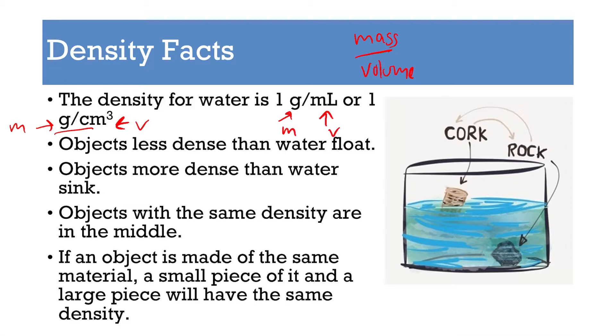Lastly, if an object is made of the same material, a small piece and a large piece will have the same density. So what do I mean by that? If I have a large cube of Fe and I measure the mass and volume and get the density is 7.87 g/cm³, if I just took a very small corner of this and now have a very tiny cube, yes the mass is different, yes the volume is different, but it's still in the same proportion. The density would still be 7.87 g/cm³. So if you're dealing with the same object, it doesn't matter the size of it, the density of that same object will always be the same.